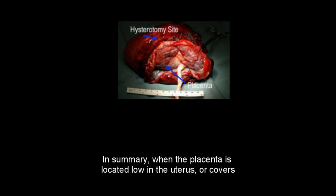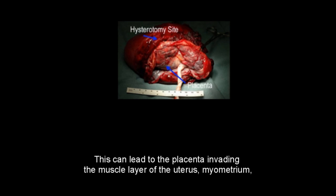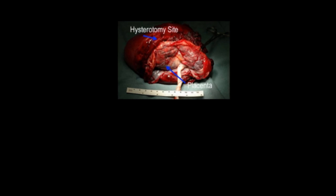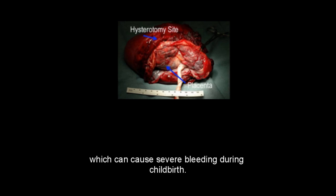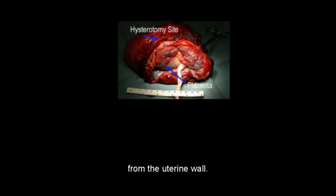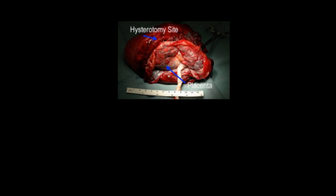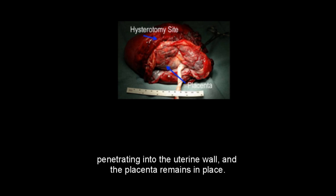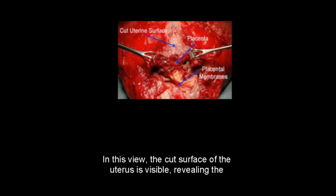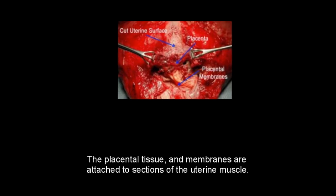In summary, when the placenta is located low in the uterus or covers the cervix — placenta previa — it may attach to a previous C-section scar. This can lead to the placenta invading the myometrium, causing severe bleeding during childbirth because the placenta does not detach completely from the uterine wall. After a hysterectomy, a cut section of the uterus shows placental tissue penetrating into the uterine wall. The cut surface reveals the placenta penetrating the uterine wall, with placental tissue and membranes attached to sections of the uterine muscle.